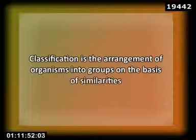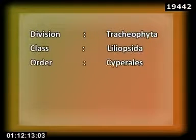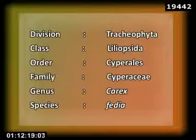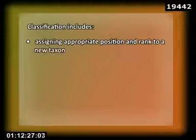4. Classification is the arrangement of organisms into groups on the basis of similarities. The groups are in turn assembled into more inclusive groups until all the organisms have been assembled in a single most inclusive group. In situations of increasing inclusiveness, the groups are assigned to a fixed hierarchy of categories such as species, genus, family, order, class, and division. The final arrangement constitutes a system of classification. The process of classification includes assigning appropriate position and rank to a new taxon,